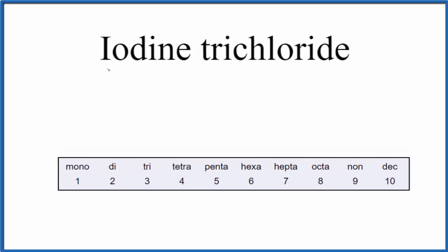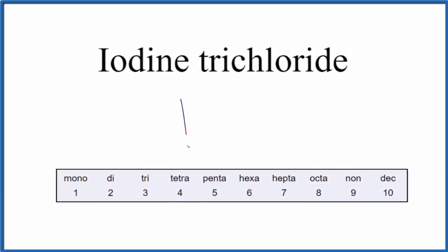First we'll write the element symbol for iodine - that's going to be just I. Then we write the element symbol for chloride, which is chlorine, so Cl. And this tri, this prefix right here, tri means three like a tricycle. So we're going to have three of the chlorine atoms. That makes the formula for iodine trichloride ICl3.